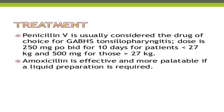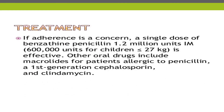For antibiotic treatment of Group A beta-hemolytic streptococcus, penicillin is the drug of choice. The dose is 250 mg twice daily for 10 days for children less than 27 kg, and 500 mg twice daily for 10 days for those greater than 27 kg. Amoxicillin is effective and more palatable if liquid preparation is required. If adherence is a concern, a single dose of benzathine penicillin — 1.2 million international units for those greater than 27 kg and 600,000 units for less than 27 kg — is effective. Other oral options include macrolides for penicillin allergy, and also first-generation cephalosporins and clindamycin.